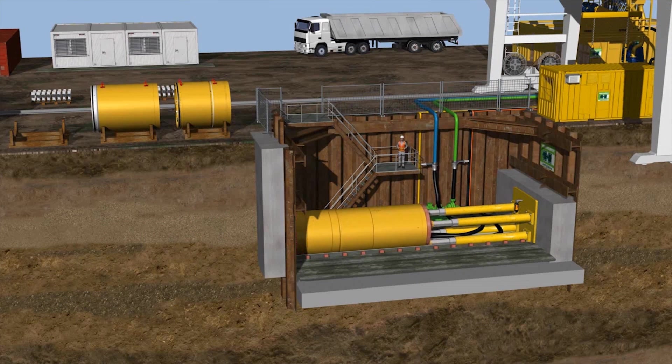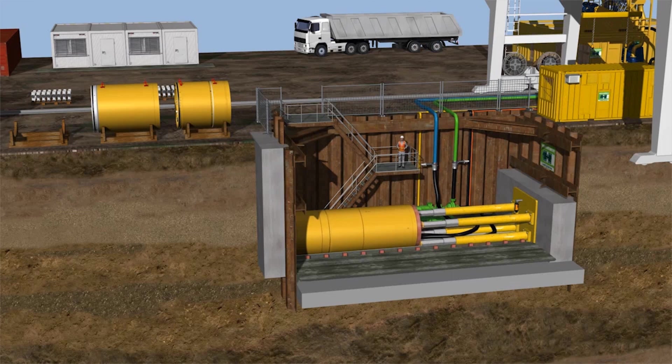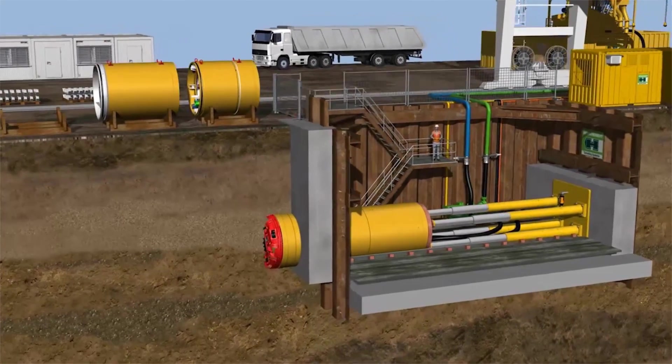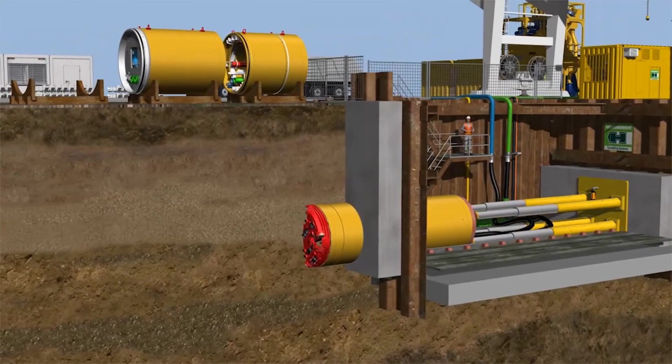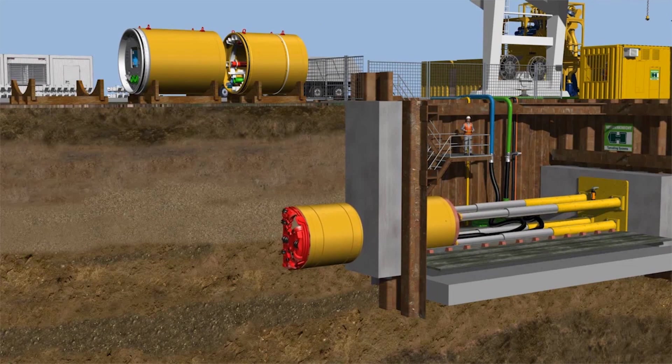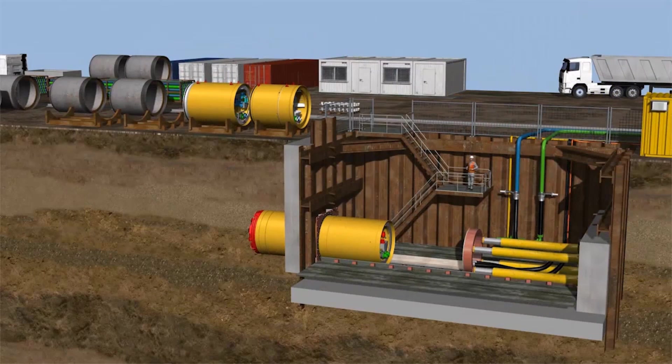The thrust cylinders are extended and push the TBM into the startup seal. Now the slurry circuit is put into operation. The rotating cutting wheel pierces the lean mixed concrete block. The excavated material is conveyed to the separation plant.